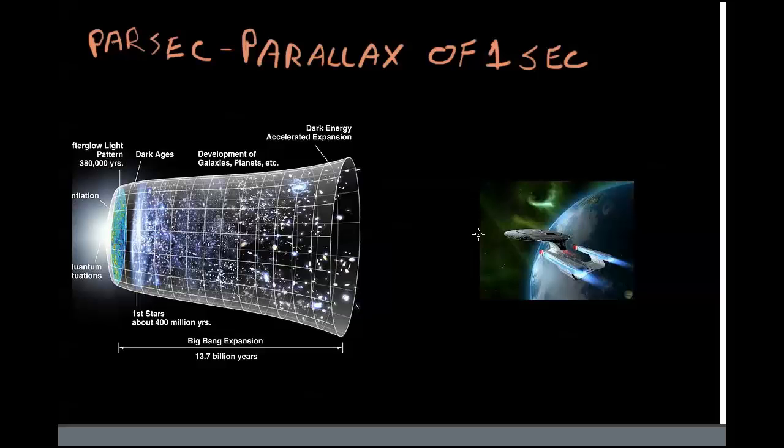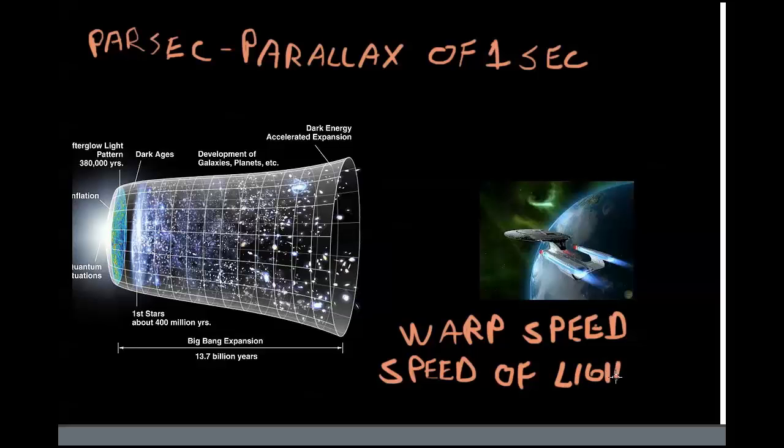Now definitely probably the best one of all is warp speed. Now warp speed hasn't been achieved yet, except in Star Trek. But warp speed is the speed of light. So when Captain Kirk asks Scotty for more power, Scotty goes she's given all she's got. Warp 10. So you can say warp 10 would be 10 times the speed of light. That's why Star Trek USS Enterprise can get so far so fast, because they can travel multiples of the speed of light.